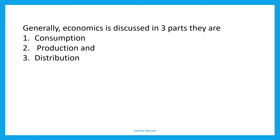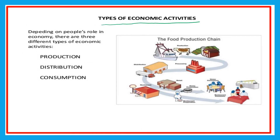Generally, economics is discussed in three parts. They are consumption, production, and distribution. There are three different types of economic activities: production, distribution, and consumption.